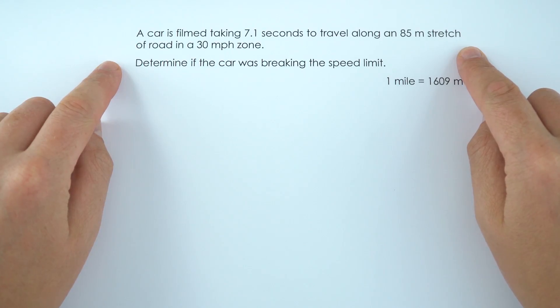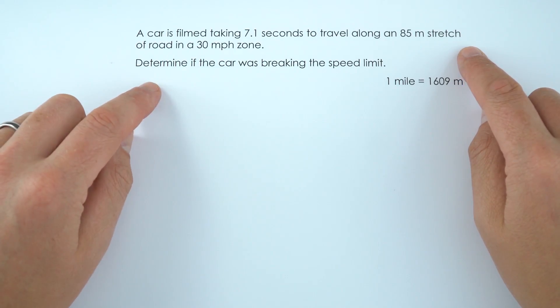So it takes 7.1 seconds to travel 85 metres along a road, and we need to work out if this car was breaking the speed limit.